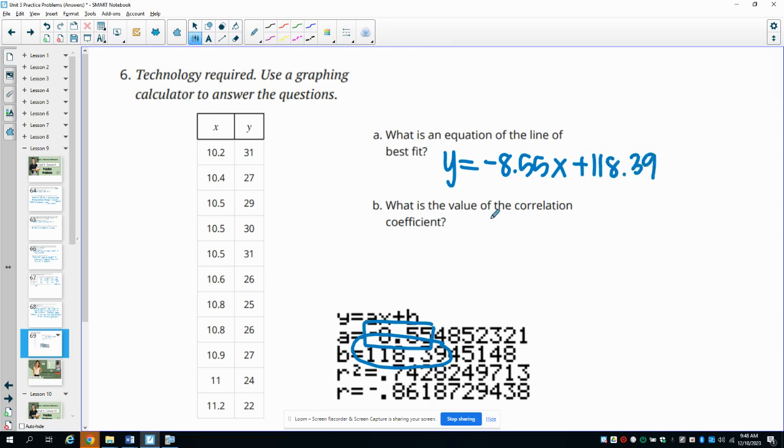So that's our equation for our line of best fit. And then B asks us what is the correlation coefficient, and your correlation coefficient is your R value. And so in this case, it is negative 0.86.